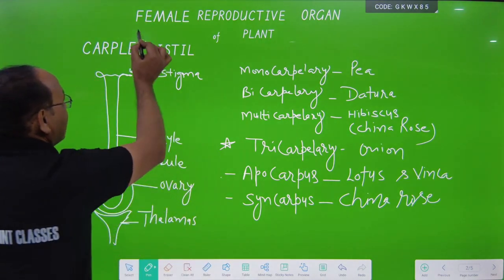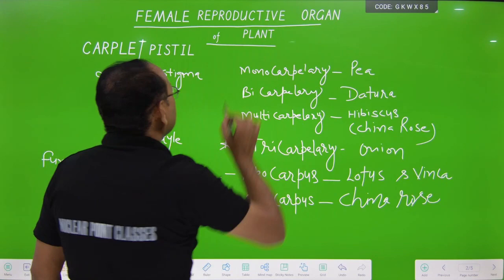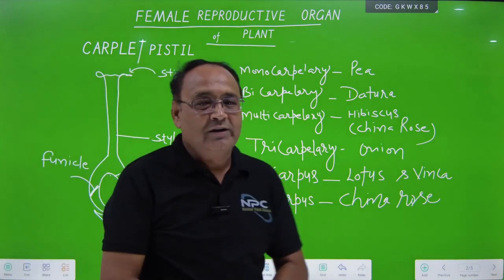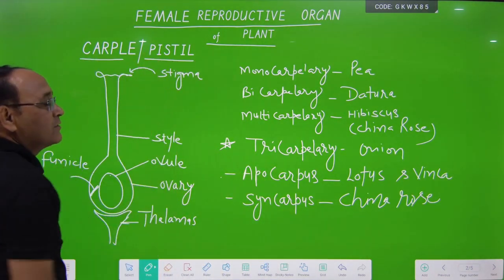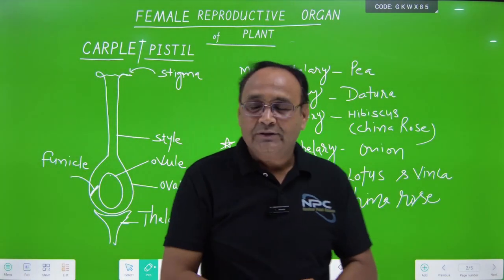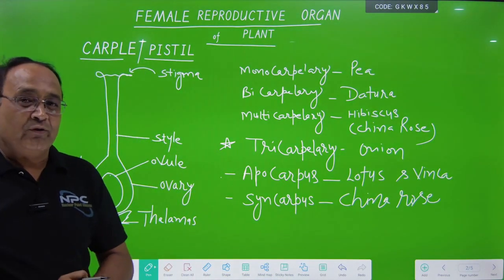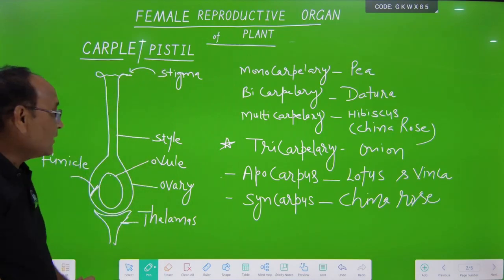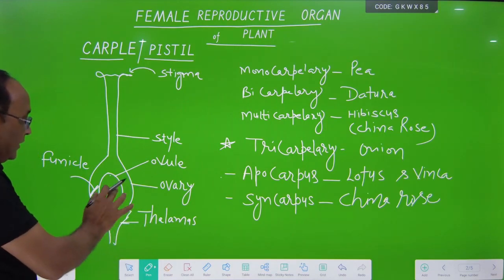The new topic is the female reproductive organ of the plant. The female reproductive organ of the flower is known as carpal or pistil. So the first question is: which organ acts as the sexual part of the plant, especially for the female? The answer is carpal or pistil.